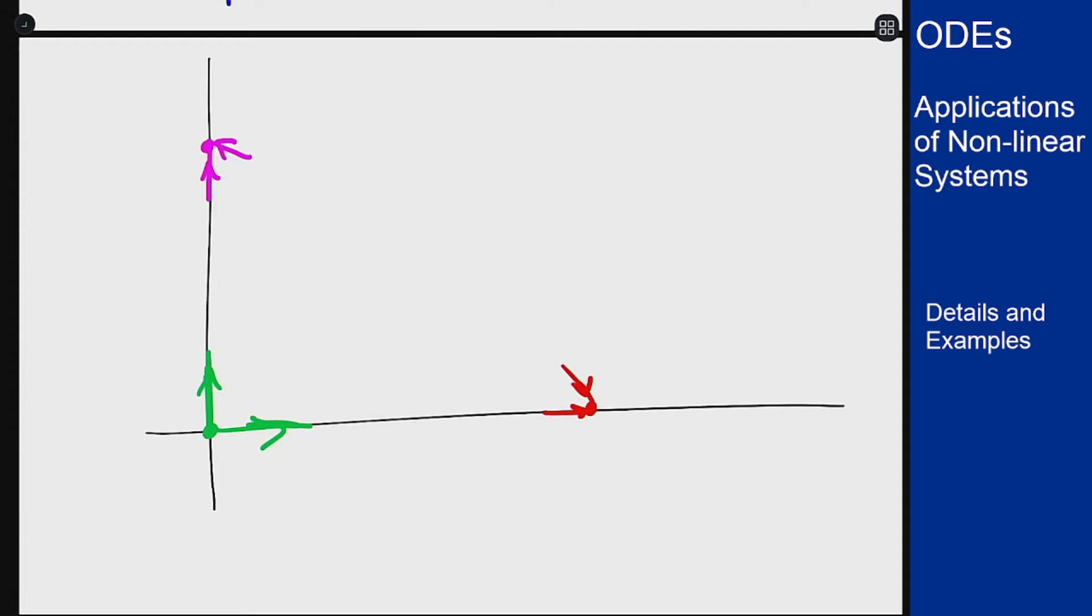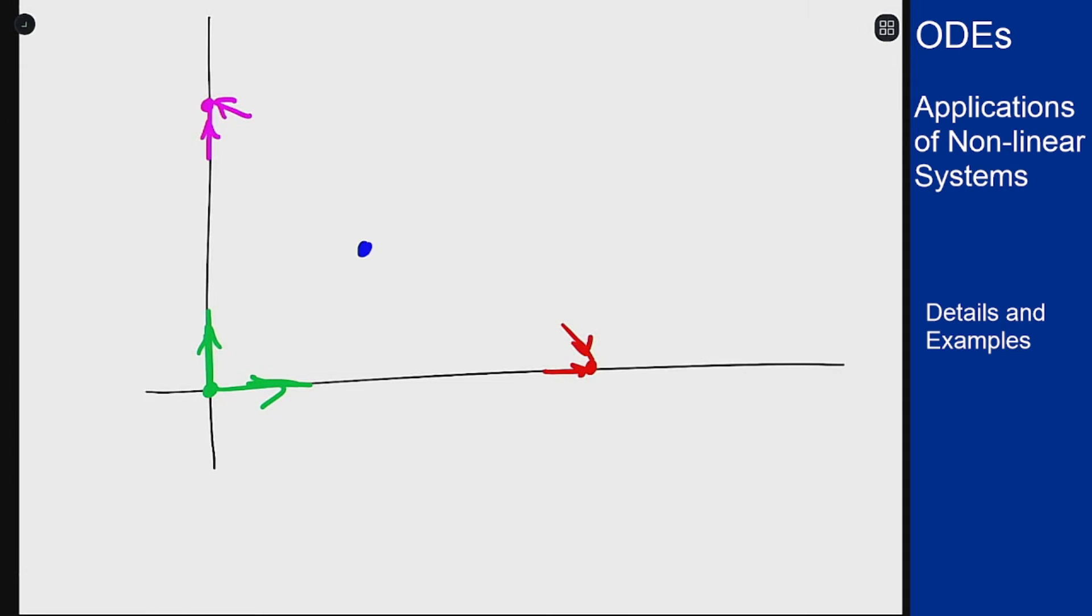Then we had a saddle at 2 comma 1. And we don't know the eigenvectors here we can just kind of estimate with sort of generic eigenvectors those ones going out these ones coming in. And you can see what's kind of going to happen here. This is now unstable and the nodal sinks are here and here.